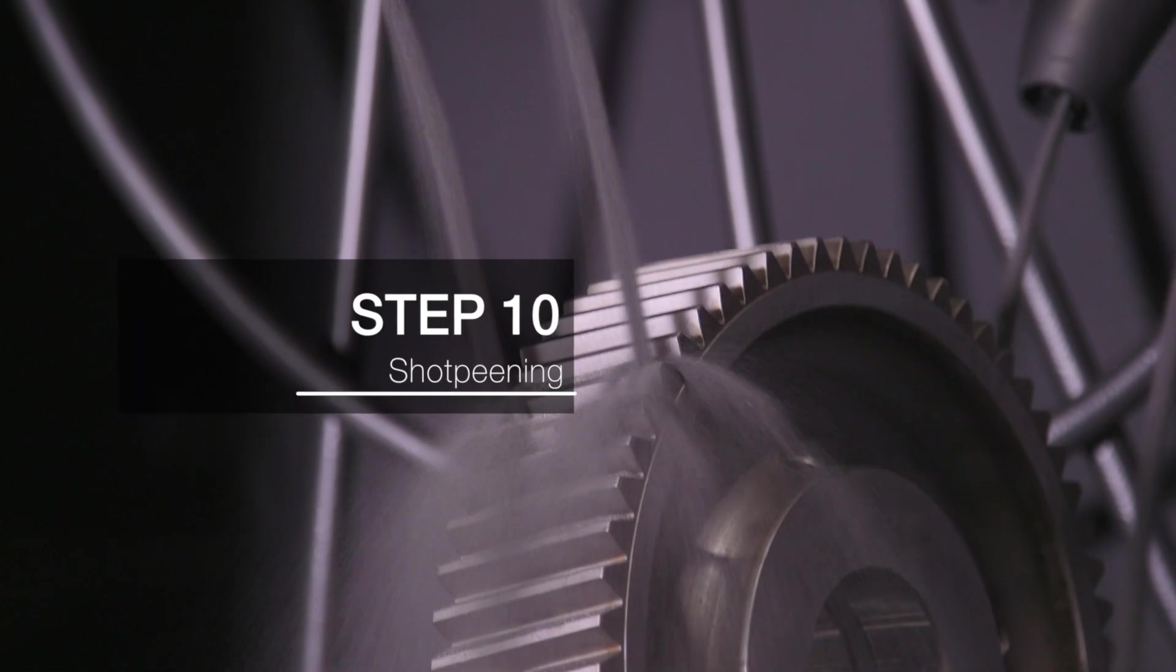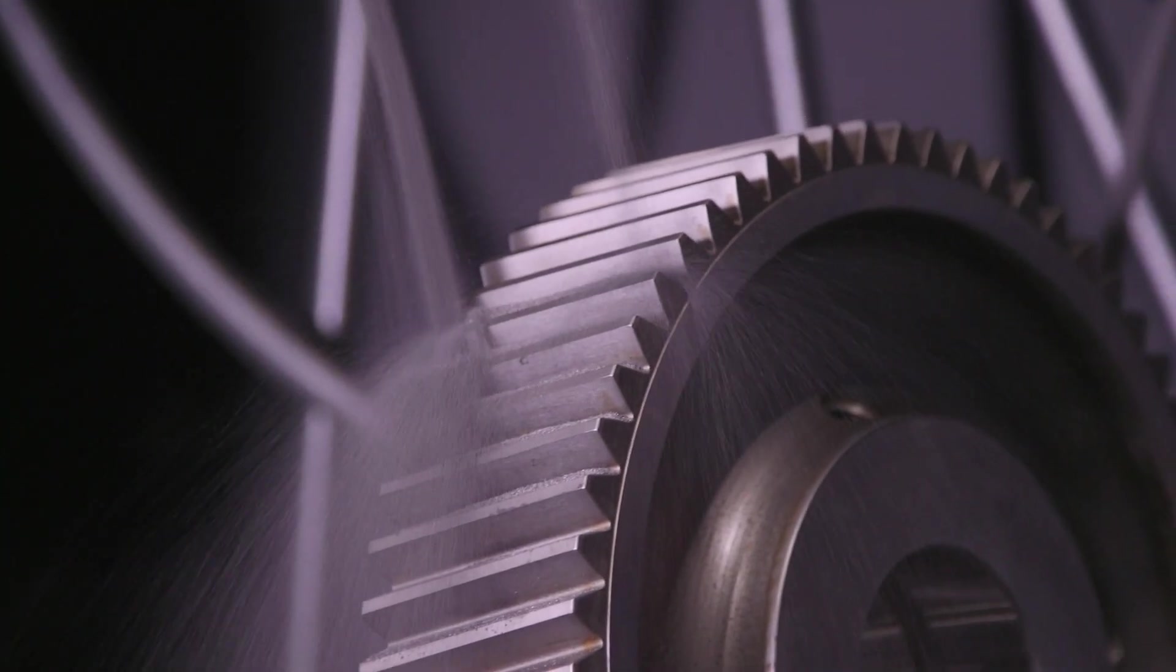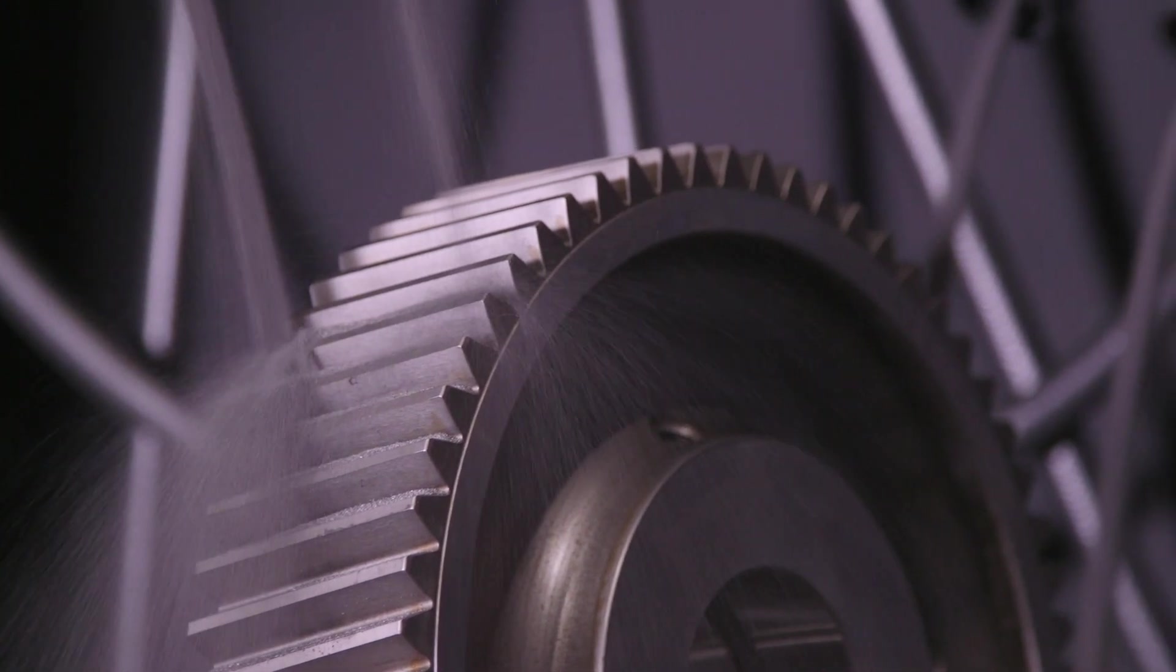As one final measure to improve the metal's properties, the gear goes through shot peening, an operation that prevents fatigue and stress corrosion failures and prolongs product life for the part.